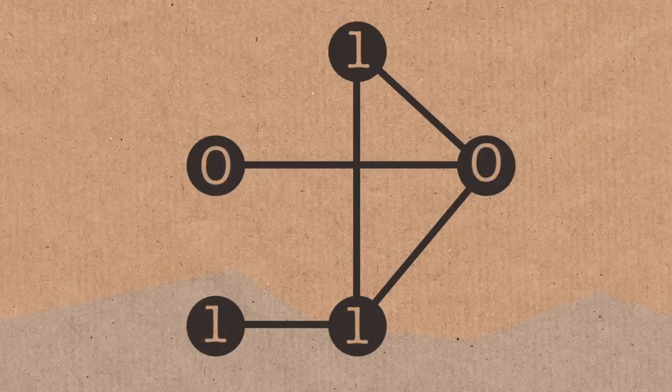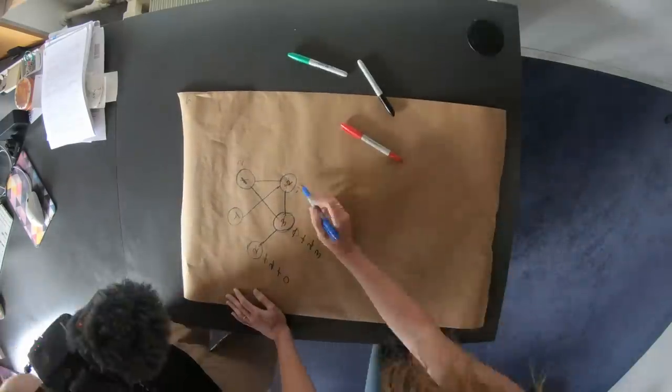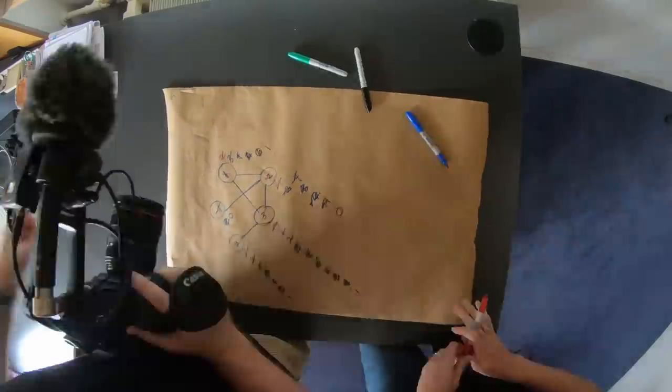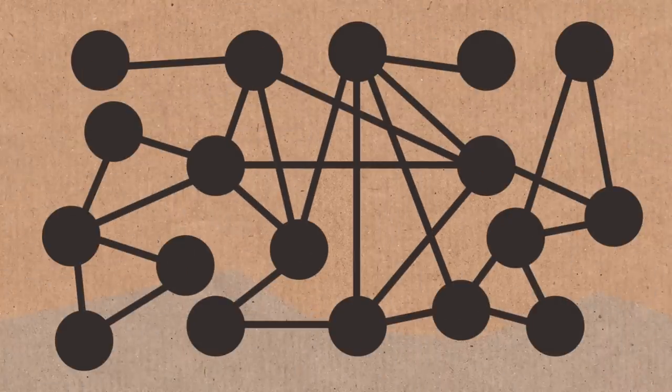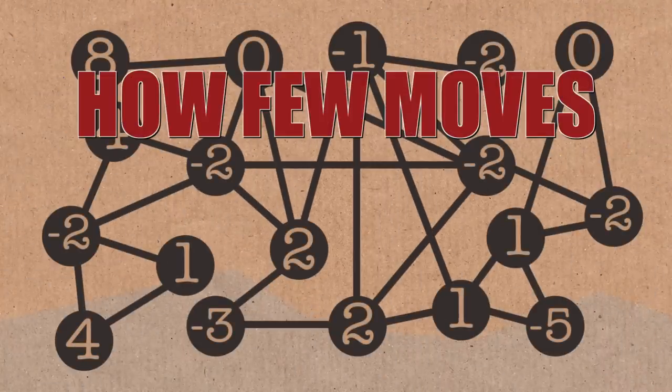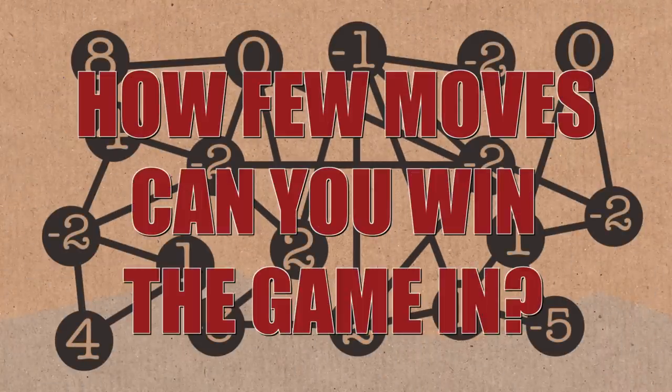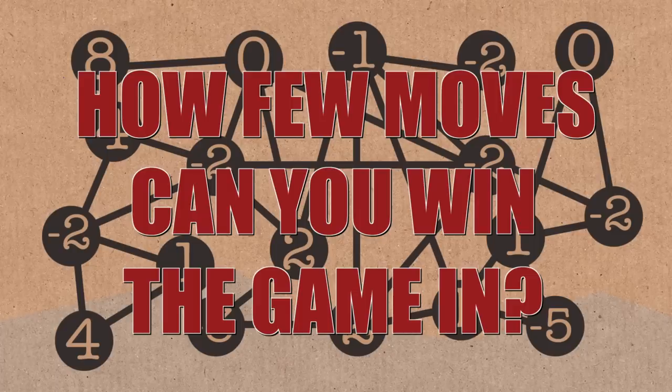As we have demonstrated very well here, it's not obvious if we took the optimal strategy to win this game. It's possible that we could have done fewer moves. And so one question you could ask is, if you hand me a game like this, if you draw the graph and you assign the numbers, how few moves can you win the game in?